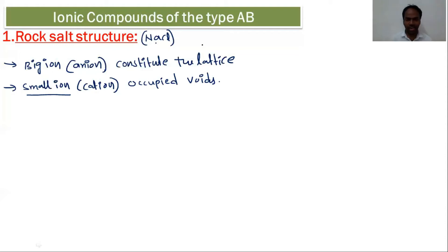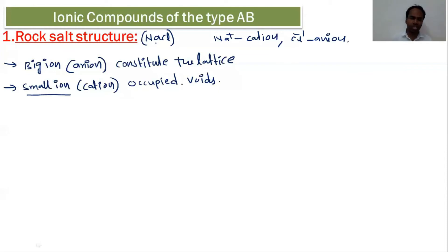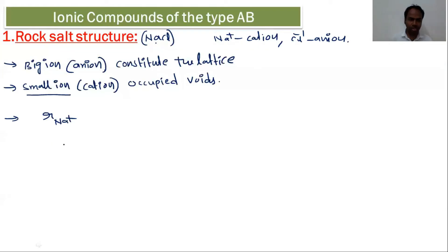In the rock salt structure, Na⁺ is the cation and Cl⁻ is the anion. Cl⁻ constitutes the lattice. To predict which type of voids are formed, we use the radius ratio. Find the ratio of r(Na⁺) to r(Cl⁻), which is approximately 0.5.